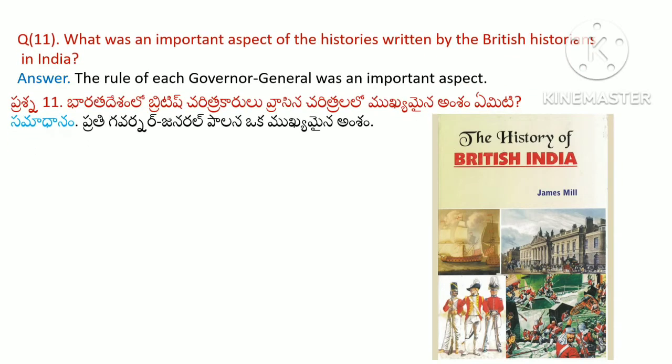What was an important aspect of the histories written by the British historians in India? The rule of each governor general was an important aspect of these histories.